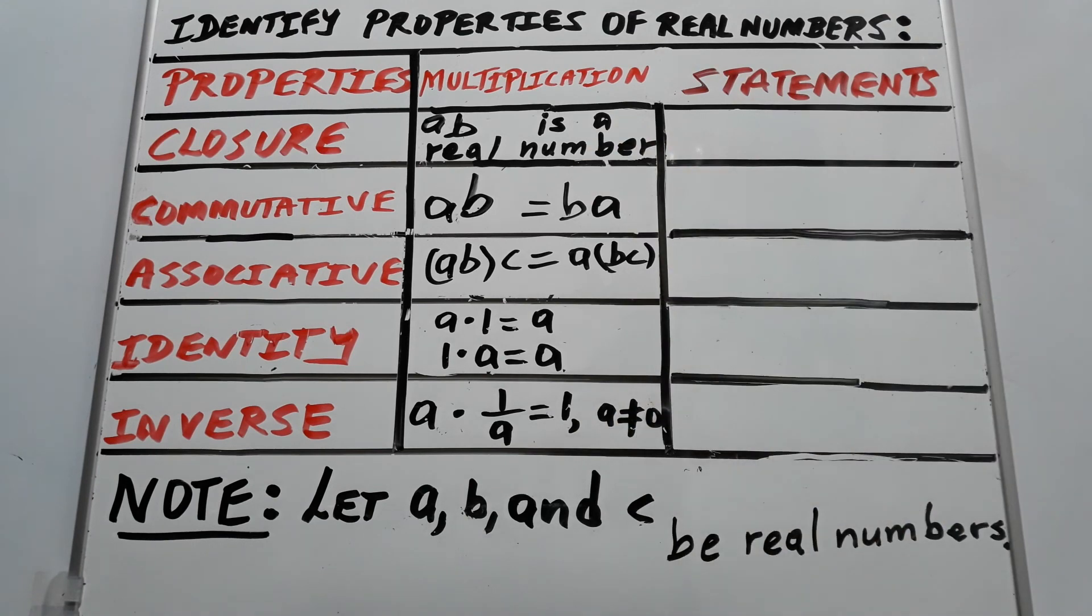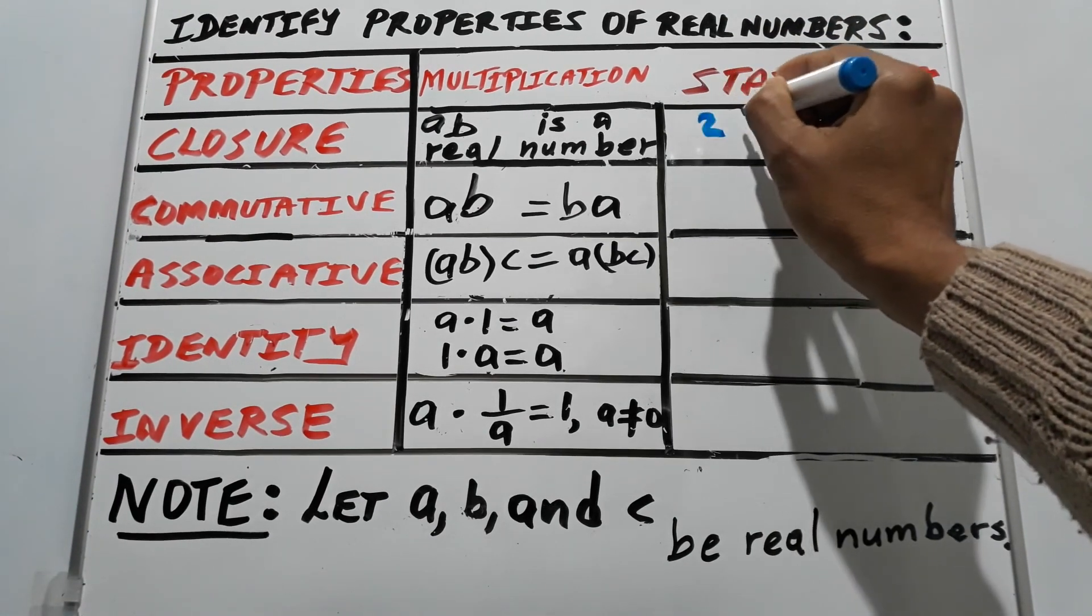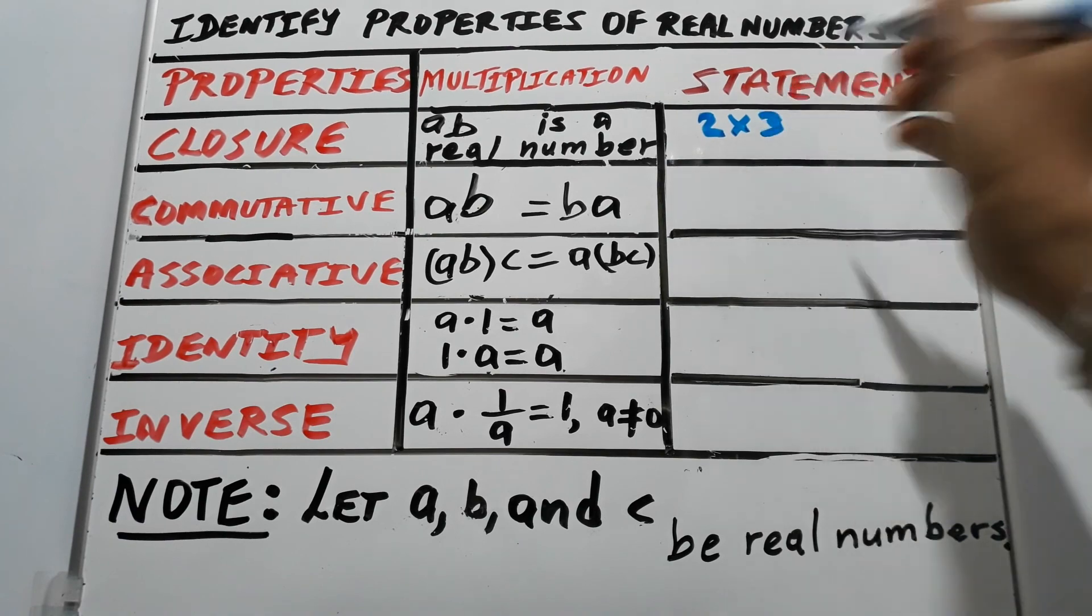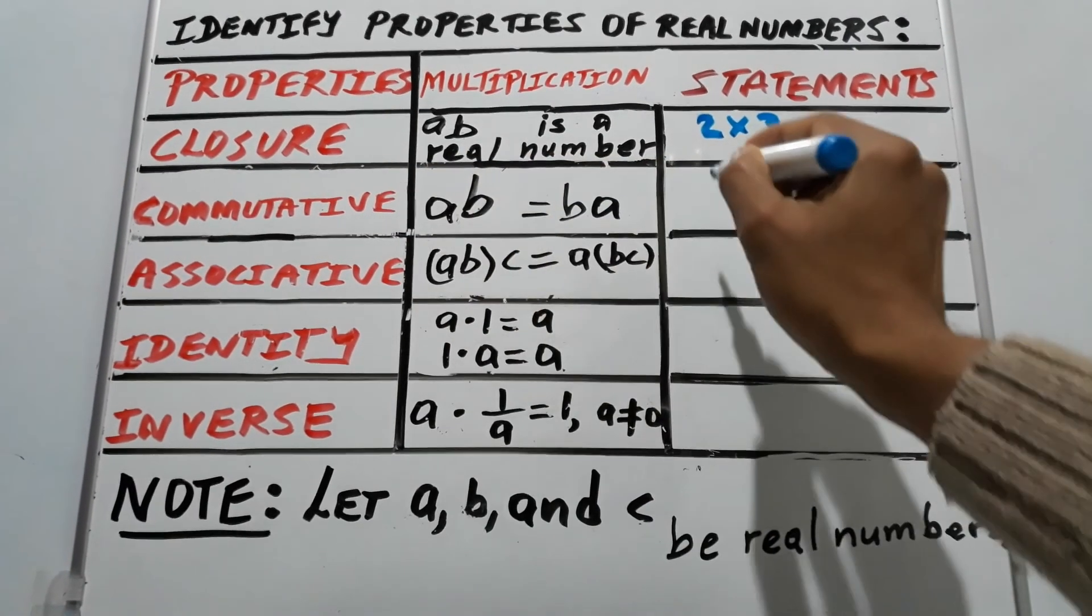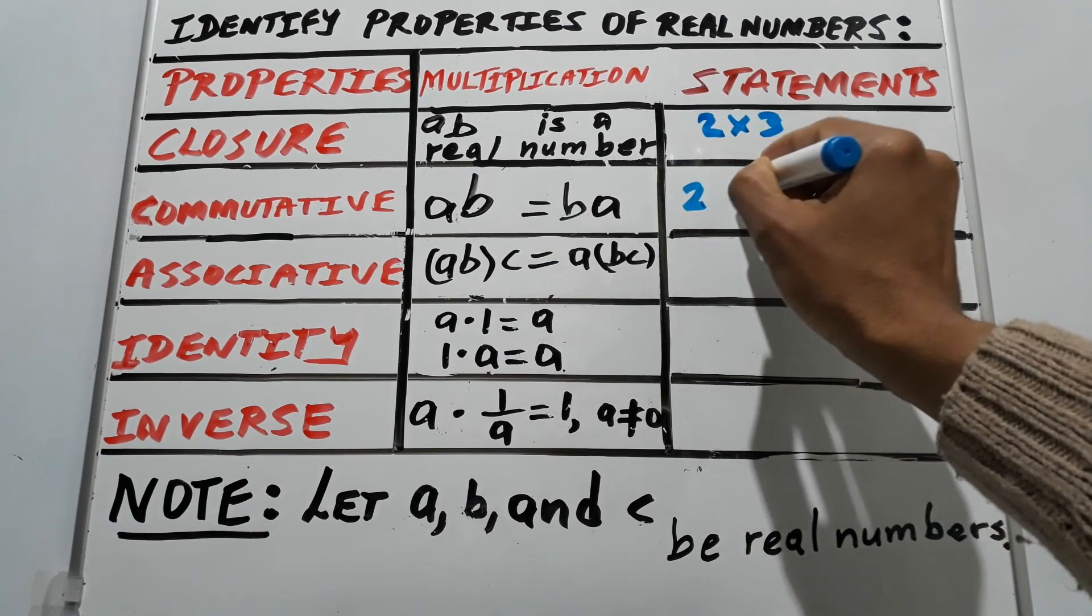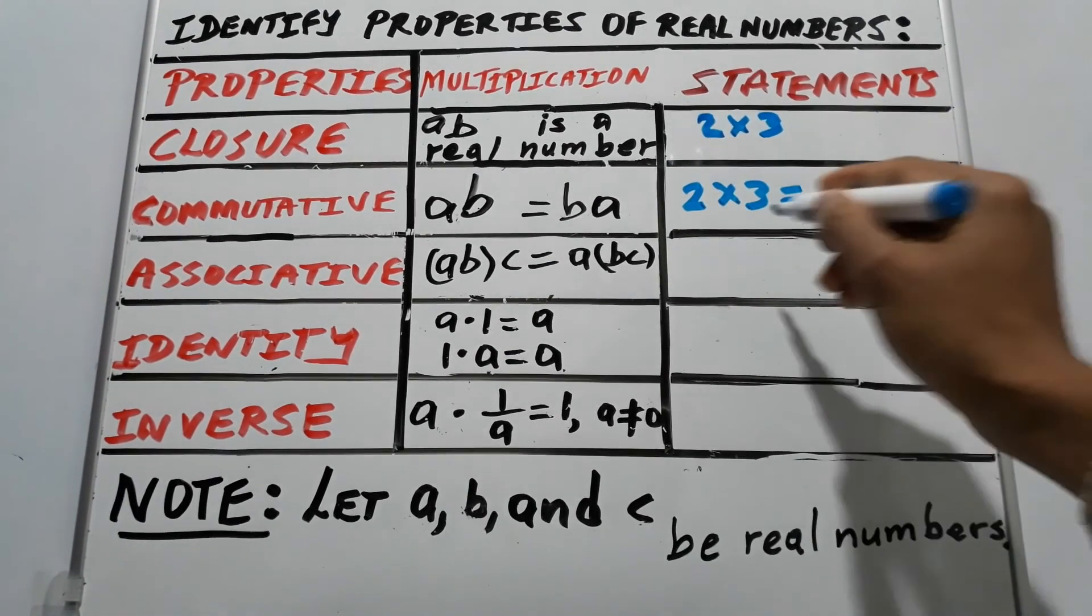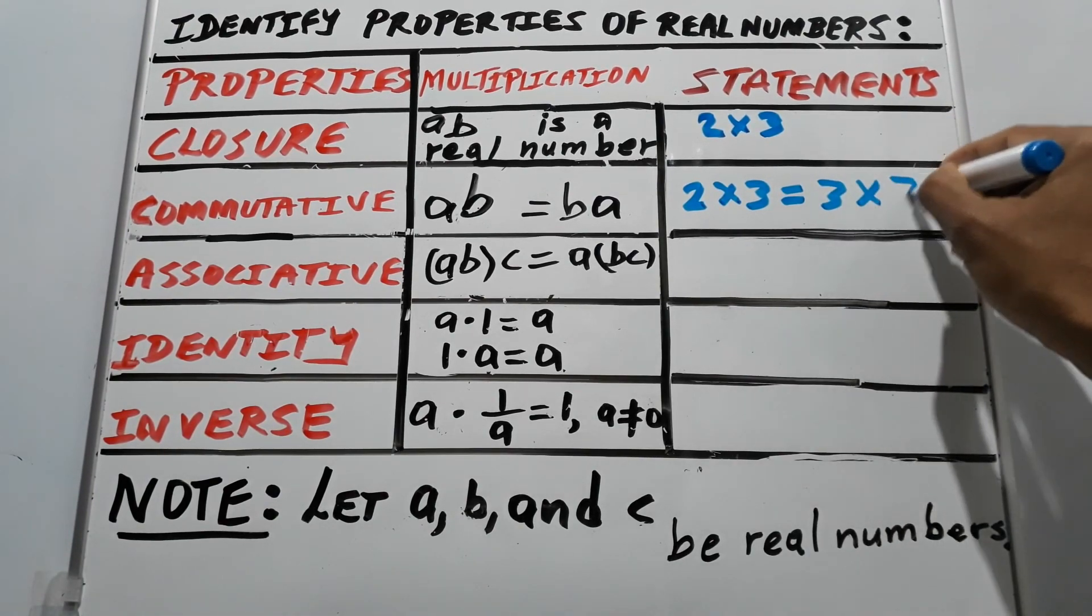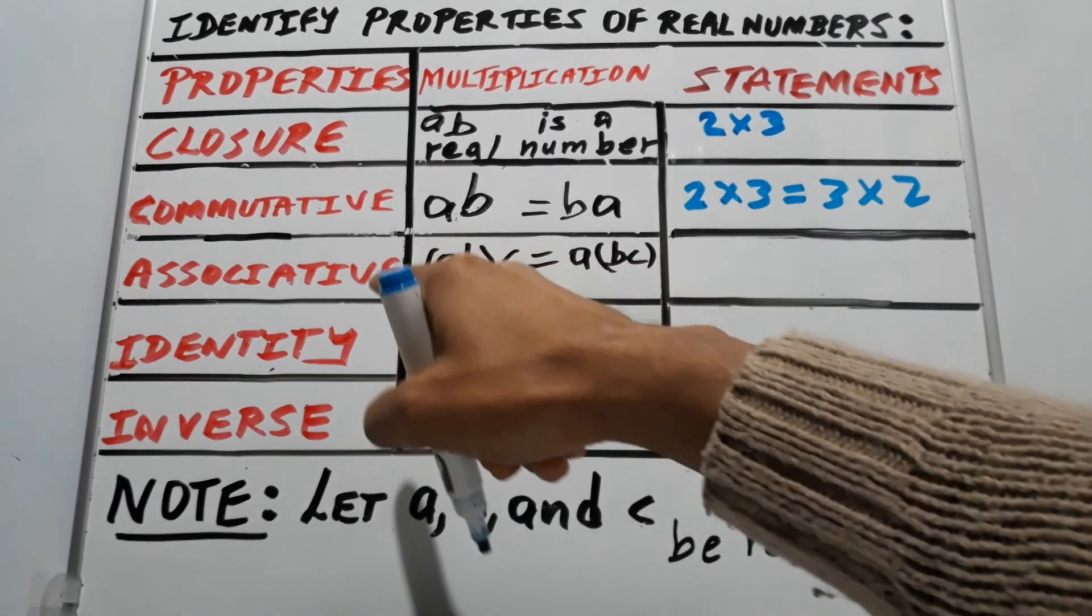Let's put numbers to clarify this. Closure: two times three equals six, it's a real number. Commutative: two times three is the same as three times two, order doesn't matter. Associative: